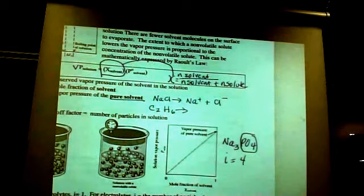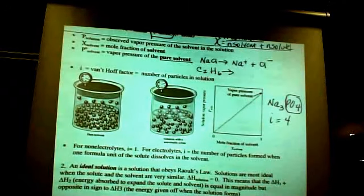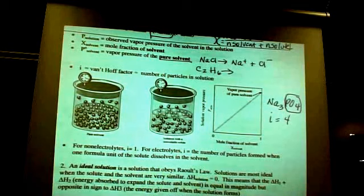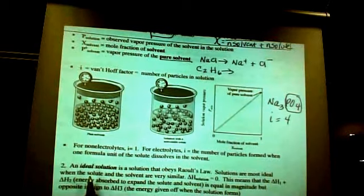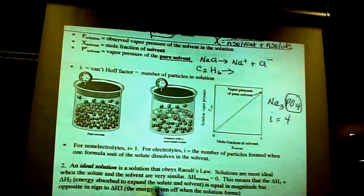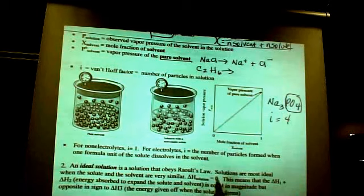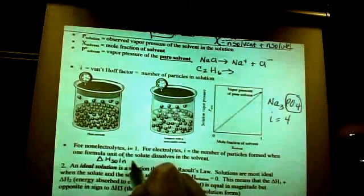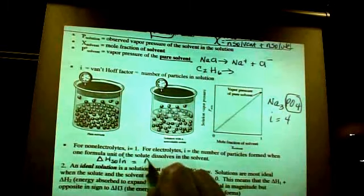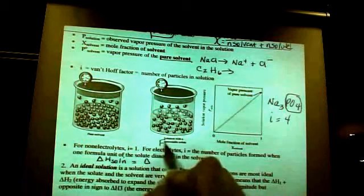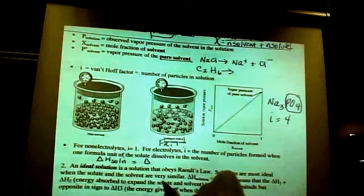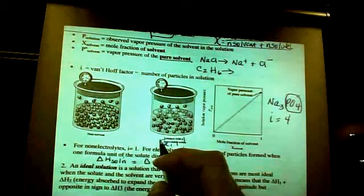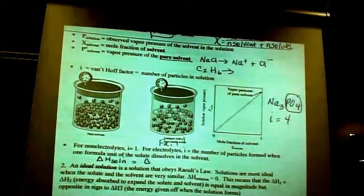An ideal solution is just like an ideal gas. What is an ideal gas? Standard temperature and pressure. Does it exist? No. Neither does this. For this, you can approximate ideal conditions when the solute and the solvent are very similar. And that is when delta H of solution is equal to zero. How many people remember what goes into calculating the delta H of solution?